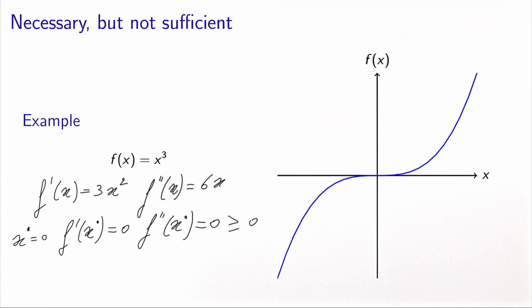So we see that the conditions from Fermat's theorem are verified for x star equals zero. But clearly, in this example, x star equals zero is not a local minimum.